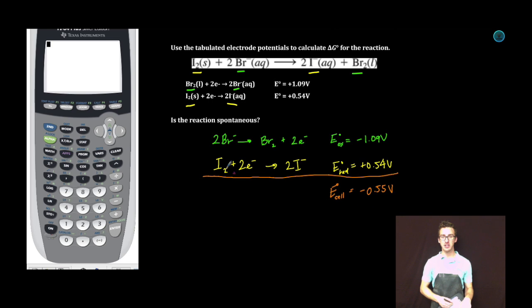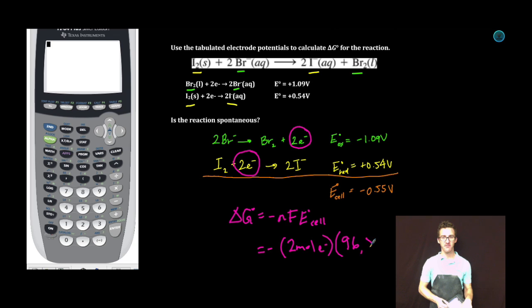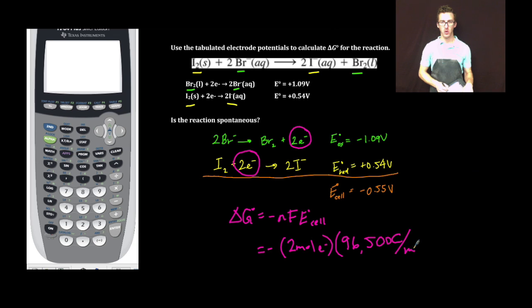Now that I've determined my cell potential, I'm going to simply recall or check out on my formula chart, the relationship between delta G and my cell potential. My number of moles of electrons transferred is 2. Faraday's constant is 96,500 coulombs per mole of electrons. That's the charge carried by 1 mole of electrons. And since we have 2 moles, we're going to multiply that number by 2 to get the total charge carried by transferring 2 moles of electrons. Then we're going to multiply that by our cell potential.